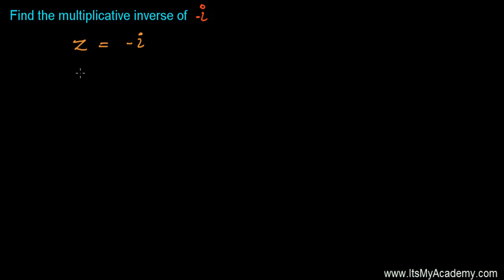Here we have a very simple and nice question. We're going to find out the multiplicative inverse of negative iota. Let me suppose this is my complex number: minus iota. The multiplicative inverse of this complex number z, we write generally z inverse equals 1 over z. That's 1 over negative iota, and I'm going to multiply and divide by the conjugate of iota, as we used to do.